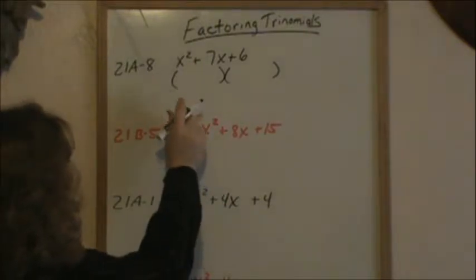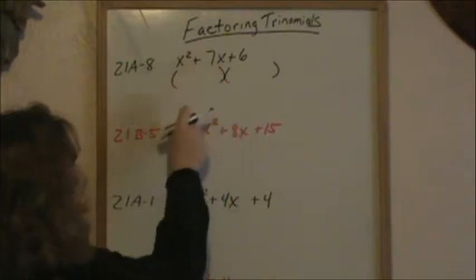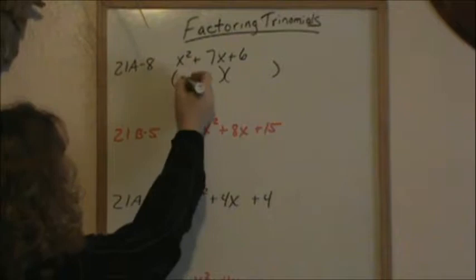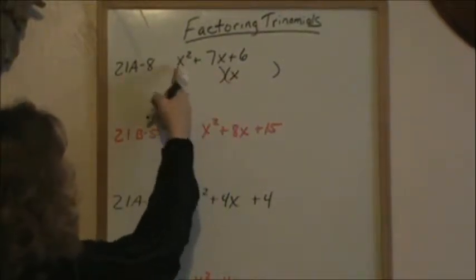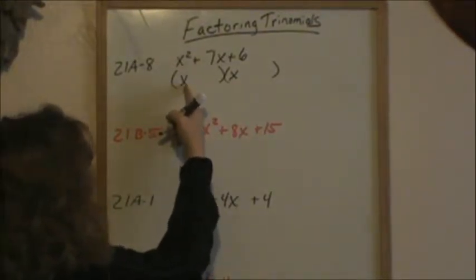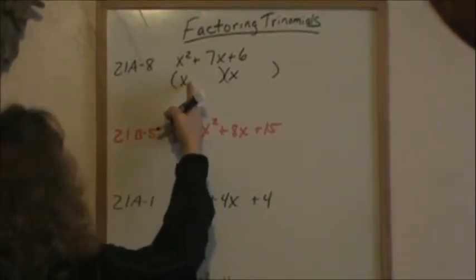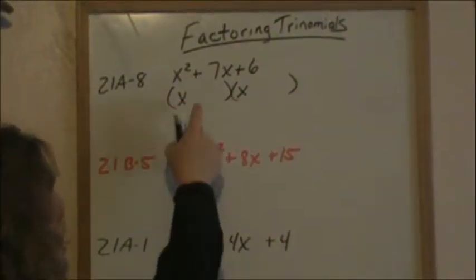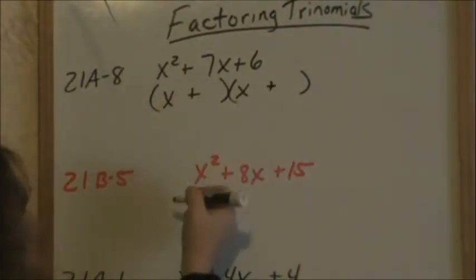When you factor trinomials, what you need to do is look at the coefficients of each of these. Starting with your x squared — if this is an x and this is an x, then you know that x times x will give you an x squared. When you FOIL back two binomials, it should give you this trinomial. The other thing you want to look at is your signs. Positive, positive — I like to say we're in a positive world. When everything is positive, you're in a positive world, which means both of these signs will also be positive.